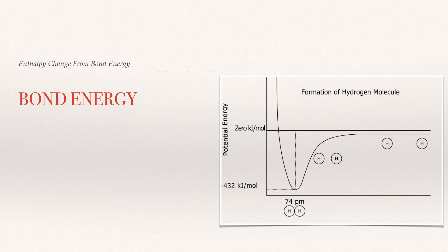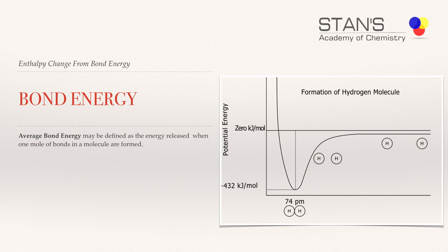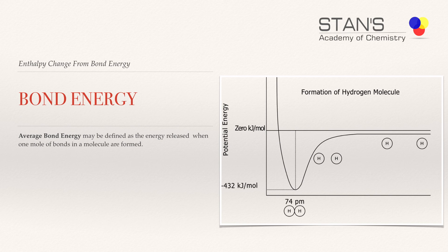In order to explain bond energy, we may look at the graph on the right side. The average bond energy may be defined as the energy released when one mole of bonds in a molecule are formed. Here, hydrogen is the molecule that we are looking at. When one mole of hydrogen molecules are formed from its elements, the energy decreases, or the energy released is 432 kilojoules. This happens when the two hydrogen atoms approach each other and reach an equilibrium distance of 74 picometers — that is the bond length. If you try to bring the hydrogen atoms closer than that, the energy is going to shoot up, or the potential energy goes up. This energy is referred to as the average bond energy.